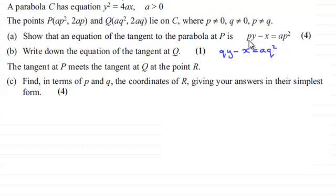We found that the equation of the tangent at P was py minus x equals ap squared, and similarly at Q it was qy minus x equals aq squared.